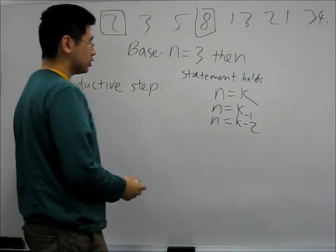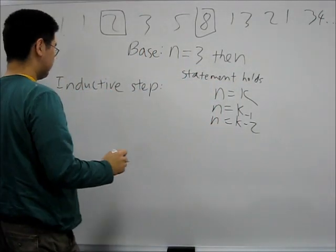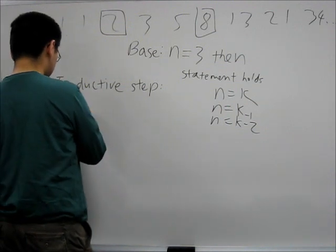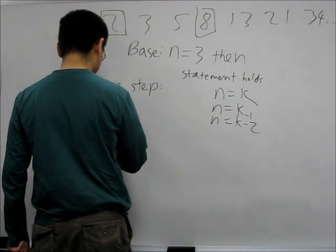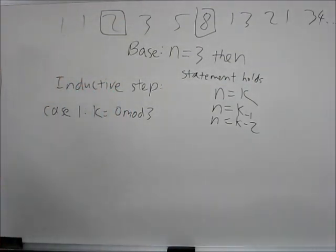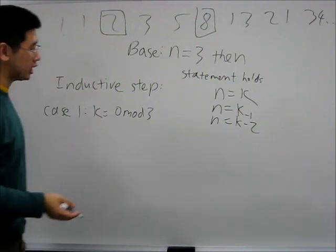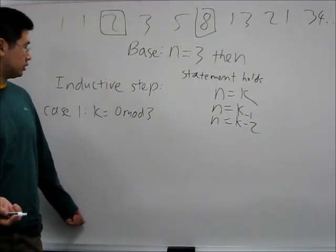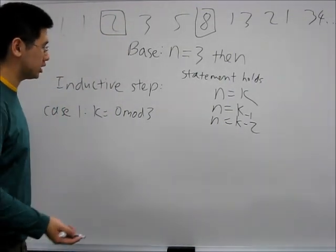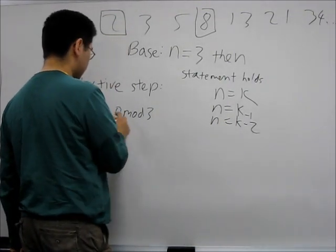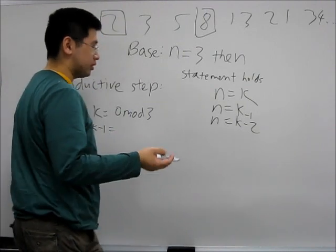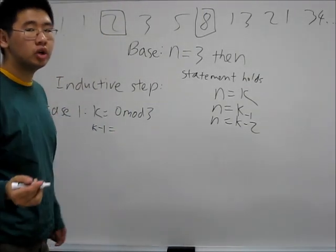We're going to do a few cases. First, we're going to assume that k is divisible by 3. Since k is divisible by 3, that means k minus 1 and k minus 2 are not divisible by 3. In other words, we know that k minus 1 and k minus 2, according to the statement, are both odd. So if k is divisible by 3, then k minus 1 is not divisible by 3 — more specifically, it's going to have a remainder of 2 when divided by 3.